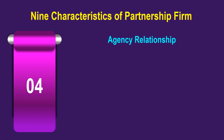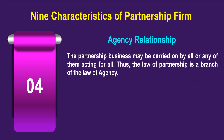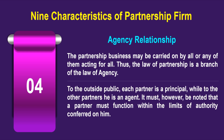The fourth characteristic is the agency relationship. The partnership business may be carried on by all or any one of them acting for all. Thus, the law of partnership is a branch of the law of agency. To the outside public, each partner is a principal, while to one another he is an agent. It must be noted that a partner must function within the limits of the authority conferred on him.